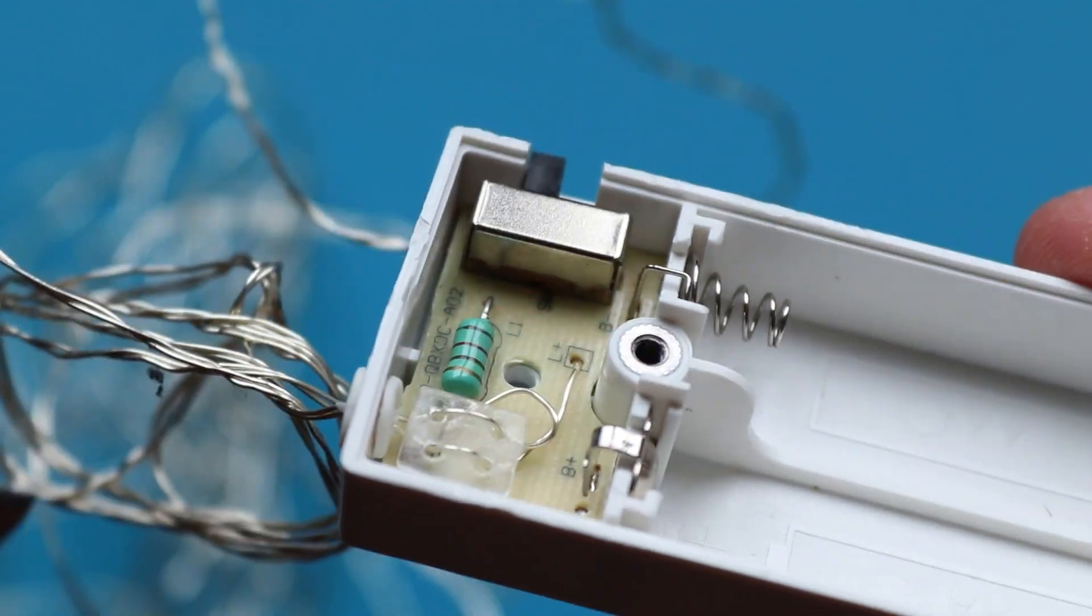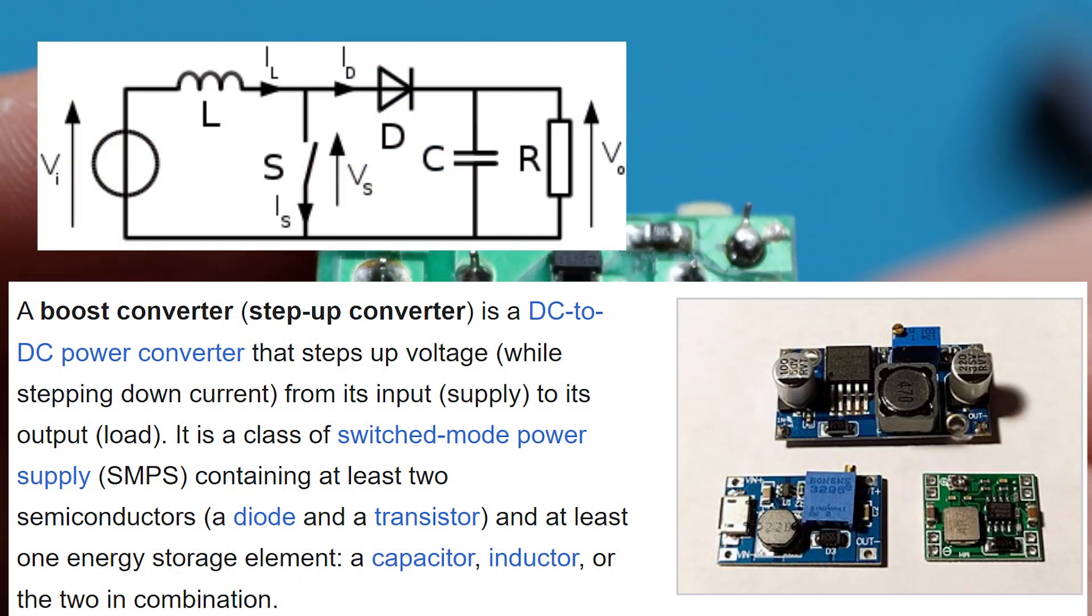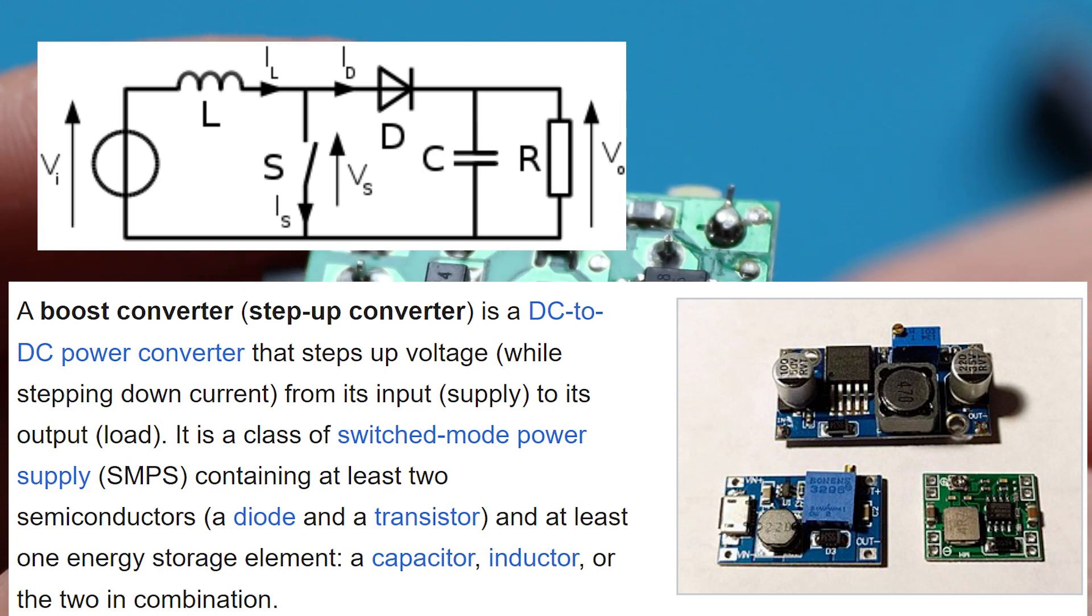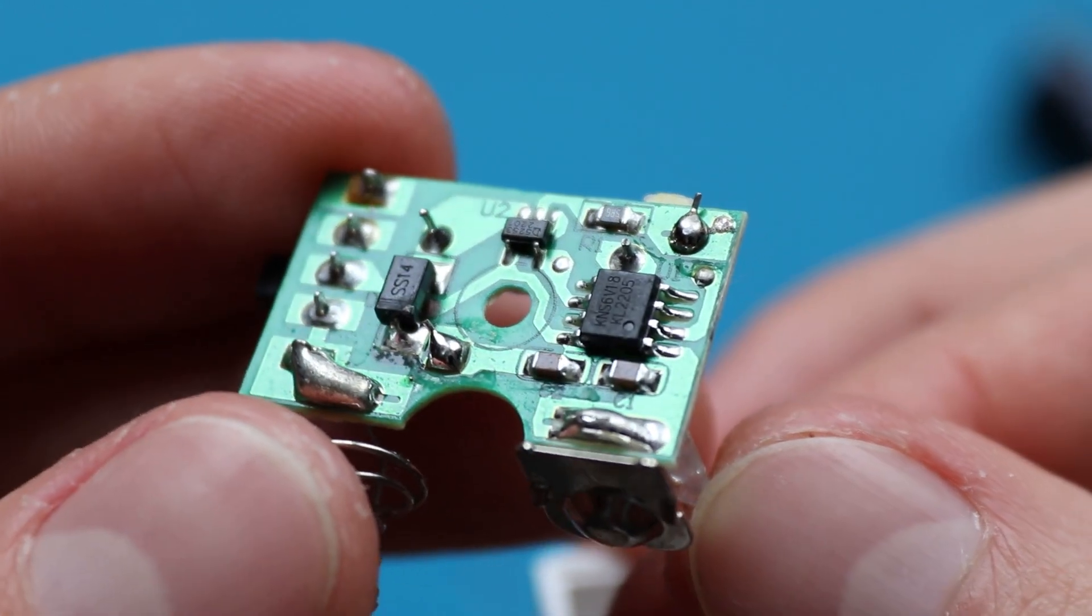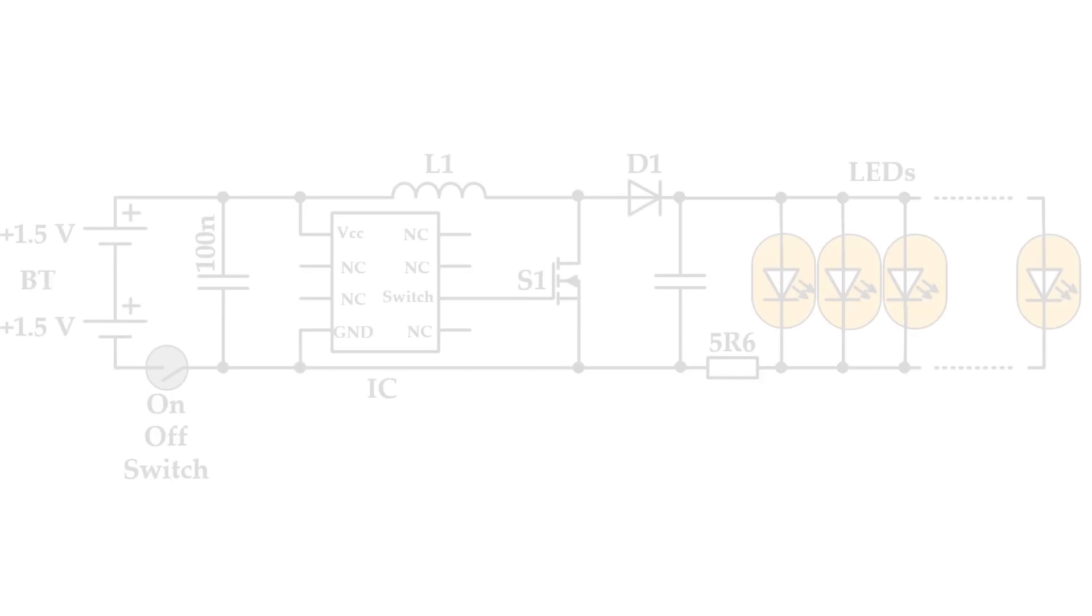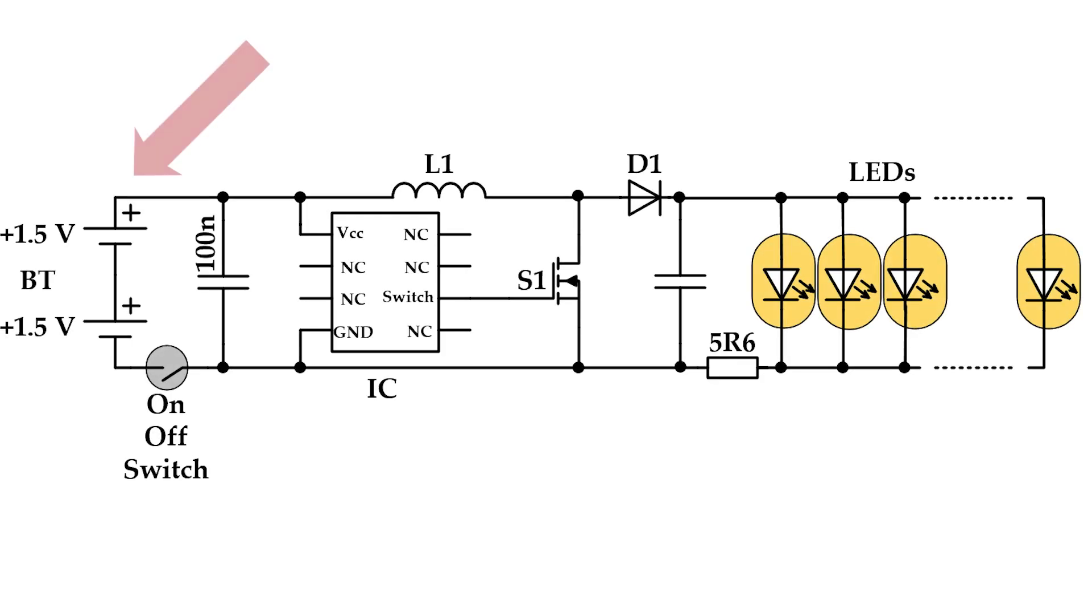So my first thought was that it is a DC-DC converter with some regulation. But in order to be sure, I did some reverse engineering and drew a schematic. Two batteries power the circuit. Simple switch is used to turn lights on and off.